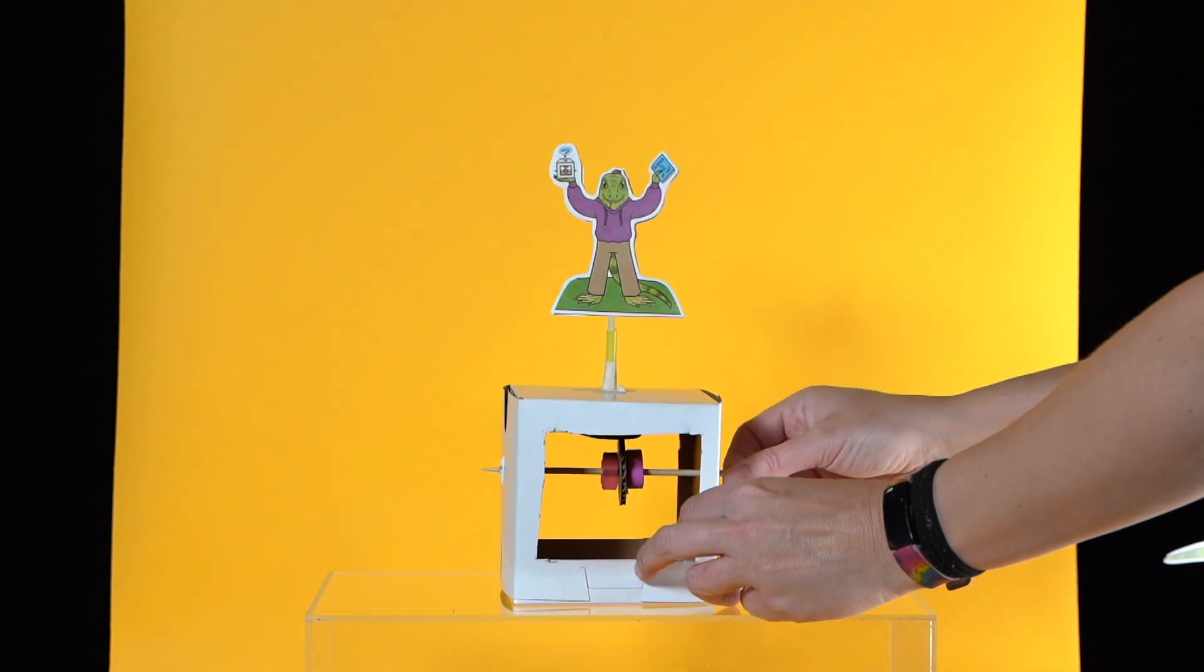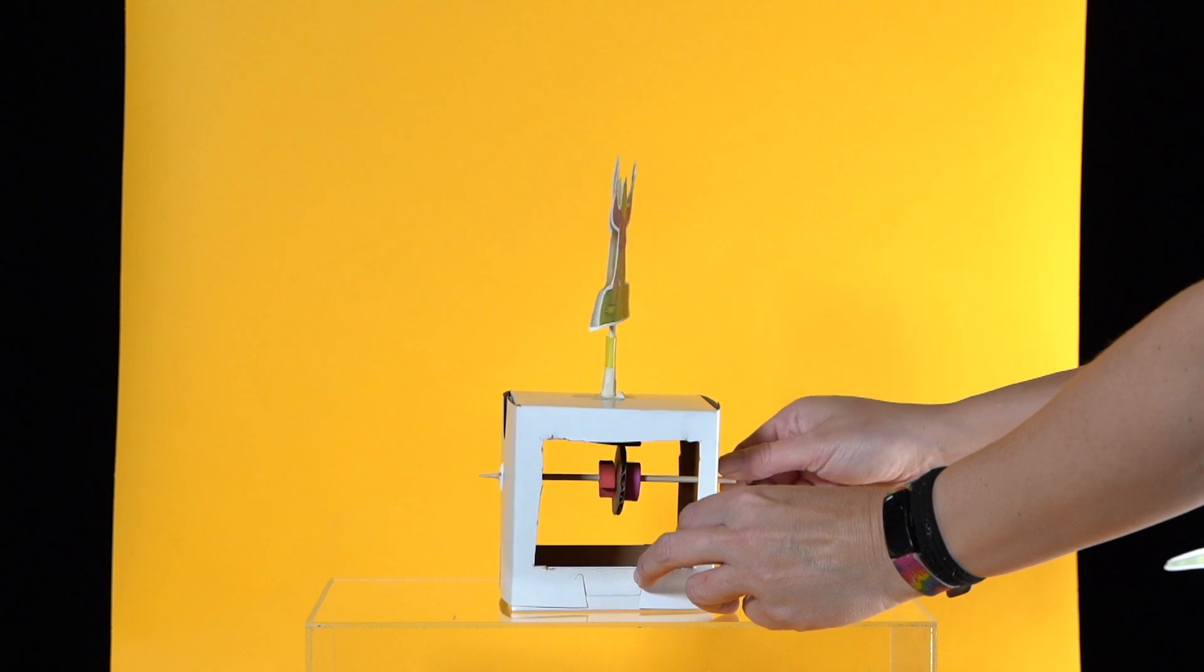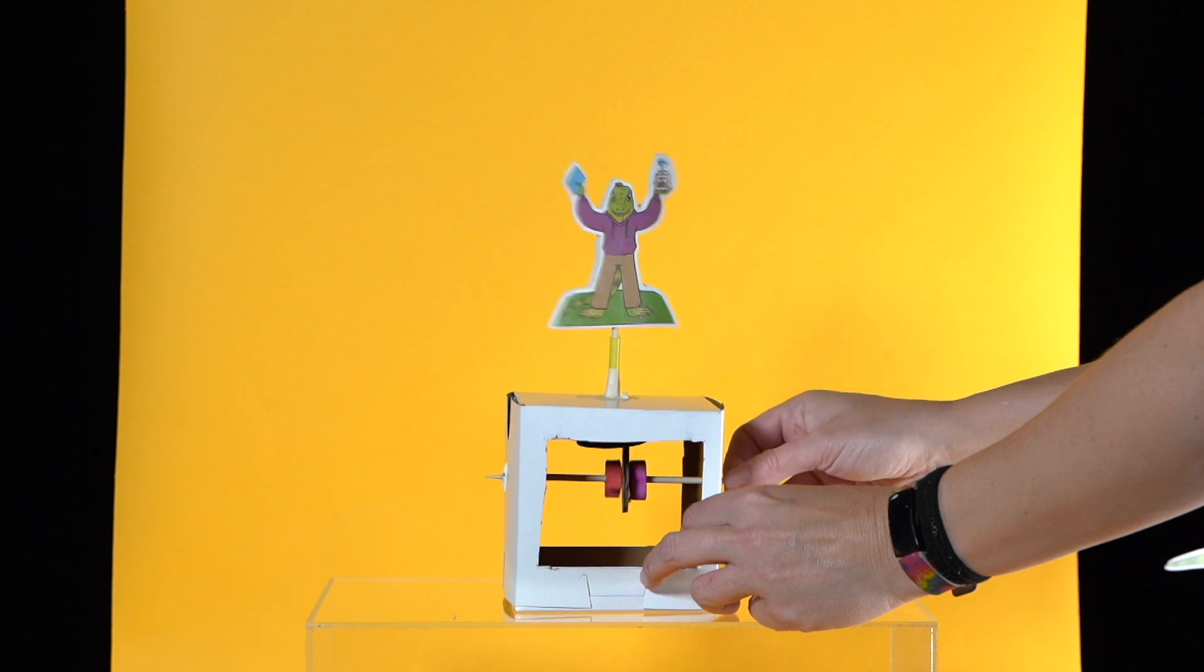When the crank is turned, it spins the cam and the picture of Iggy that is attached to the cam follower turns around. It looks like Iggy is looking around to try and figure out what exhibit they should check out next.